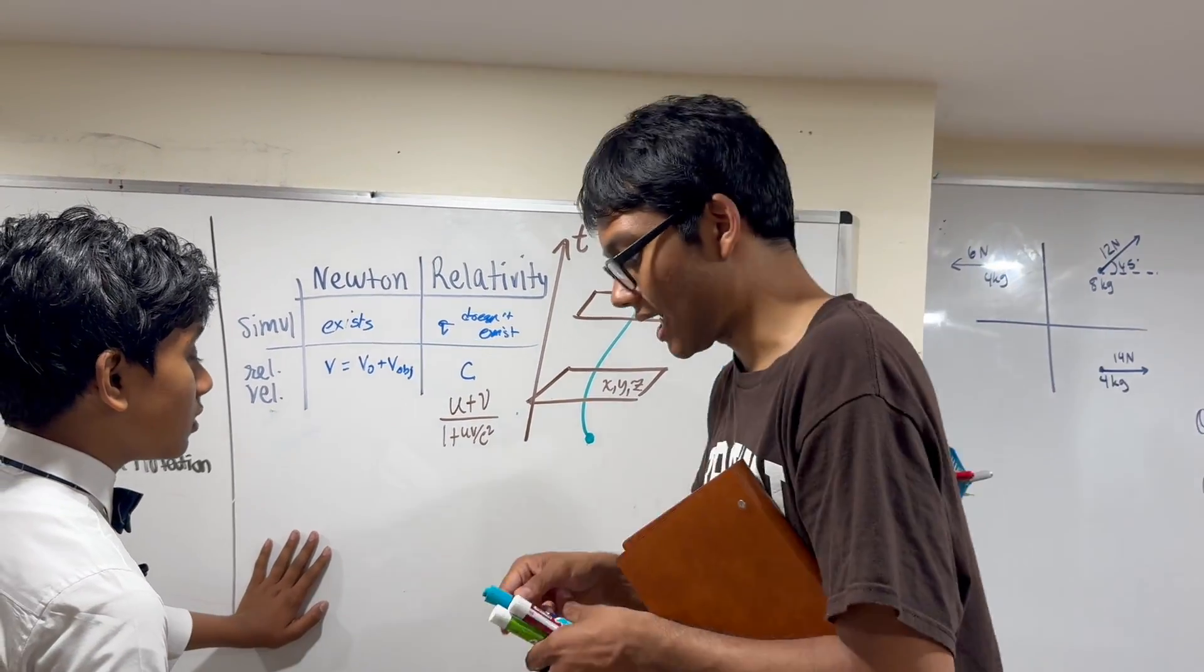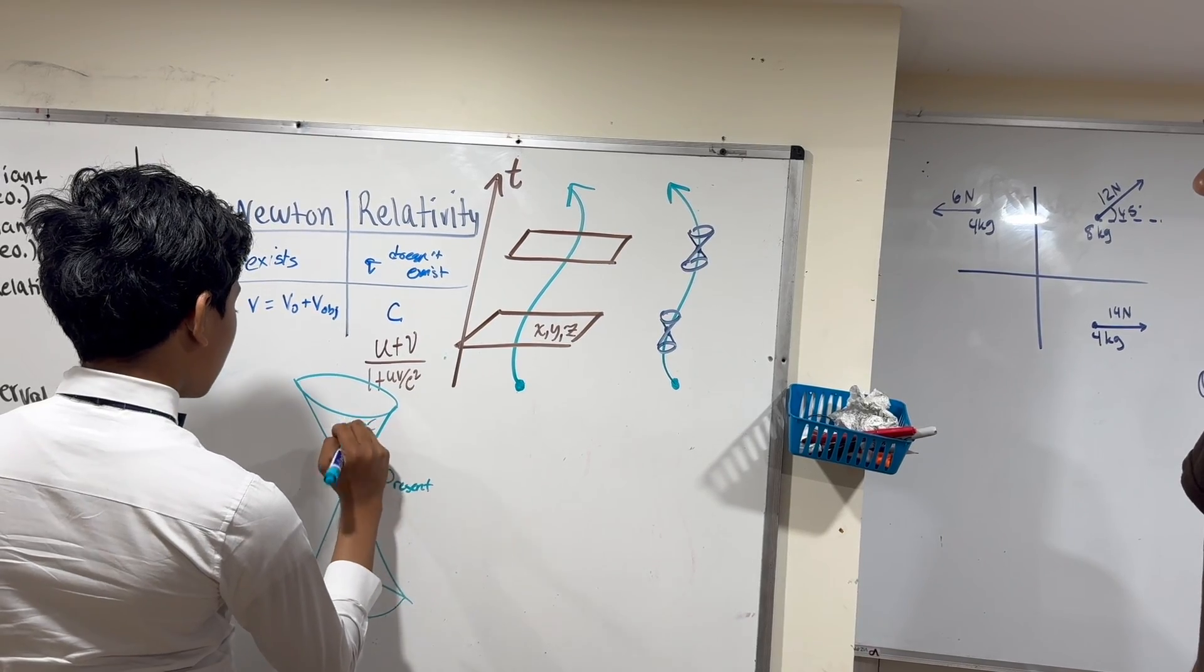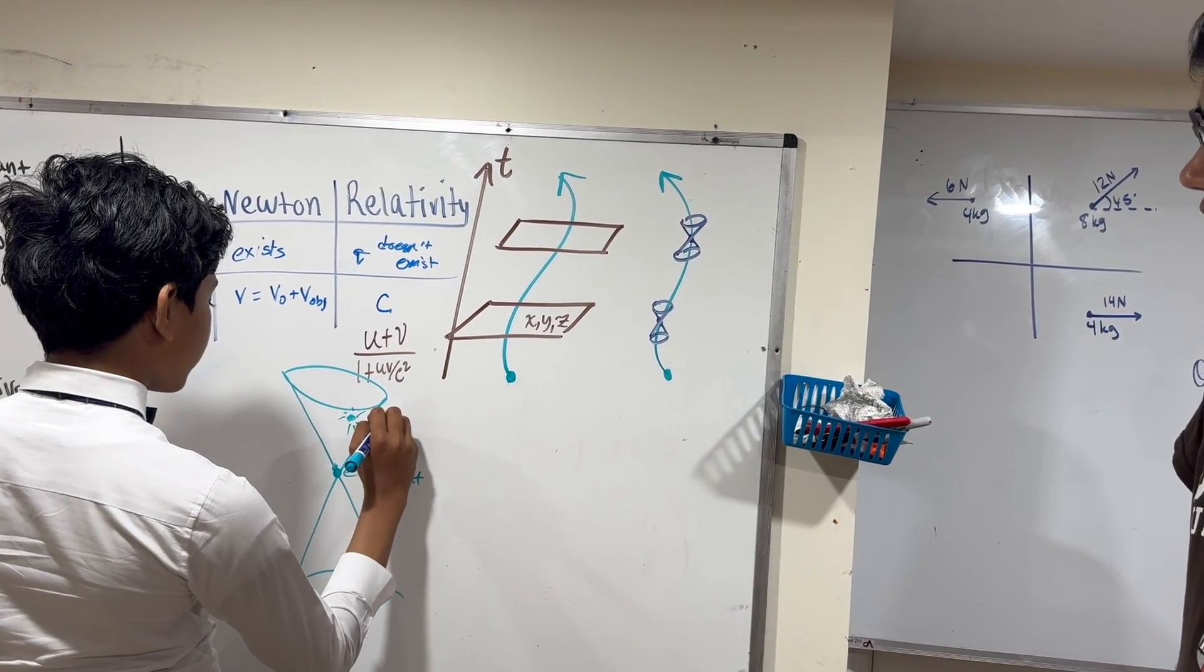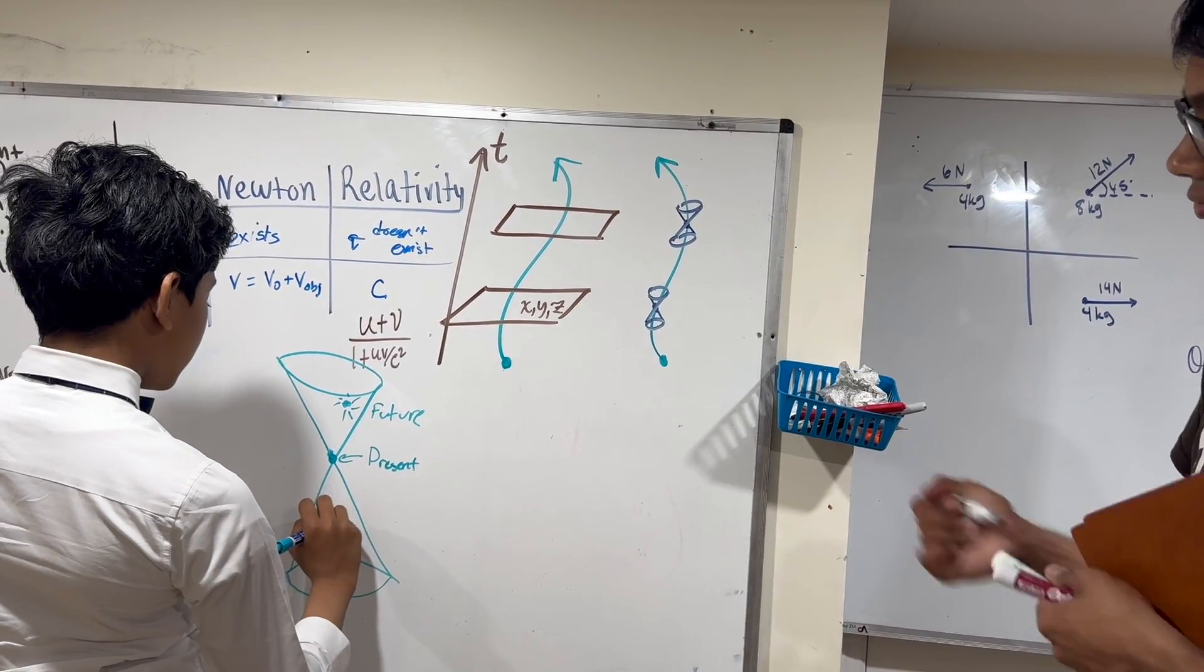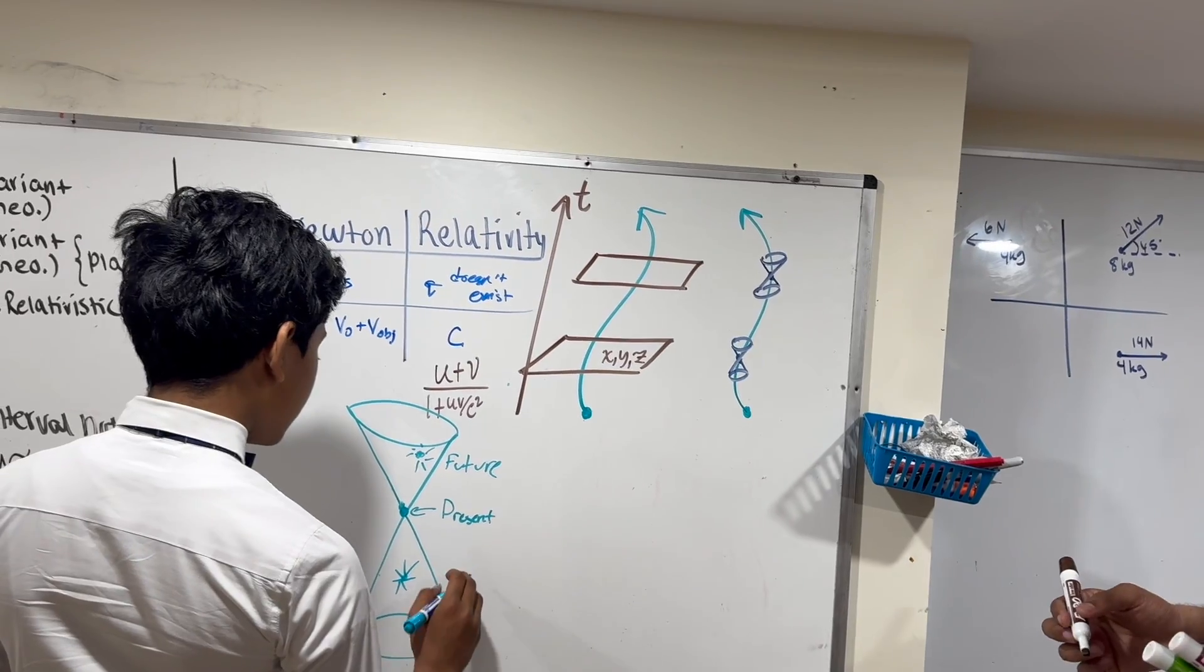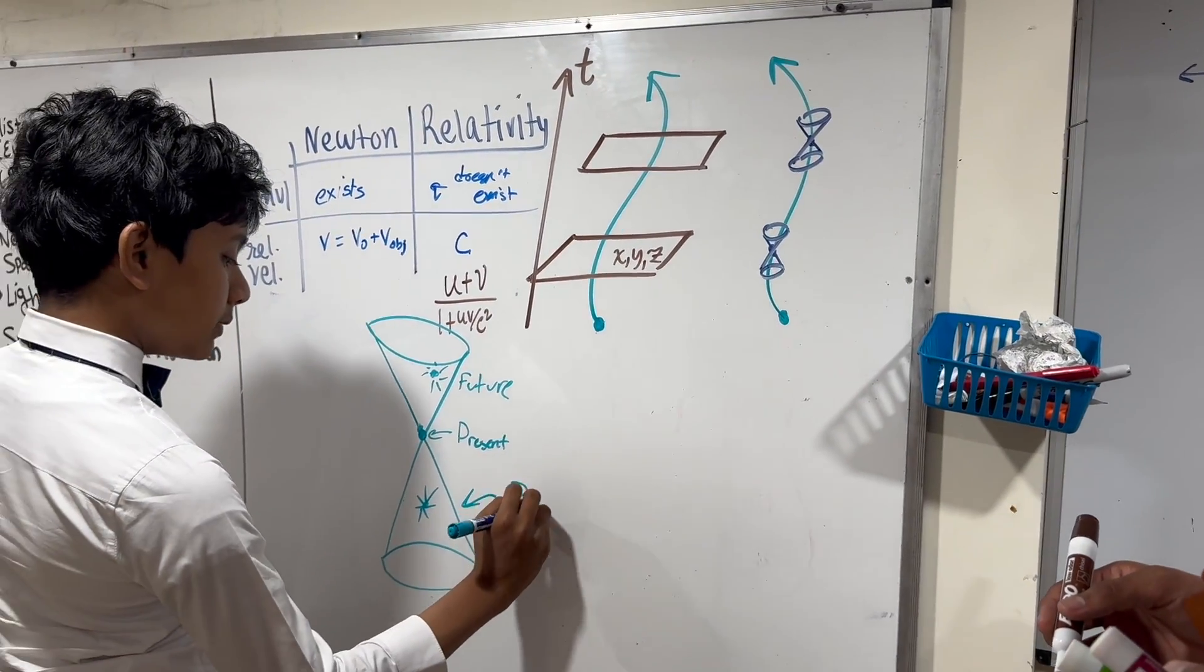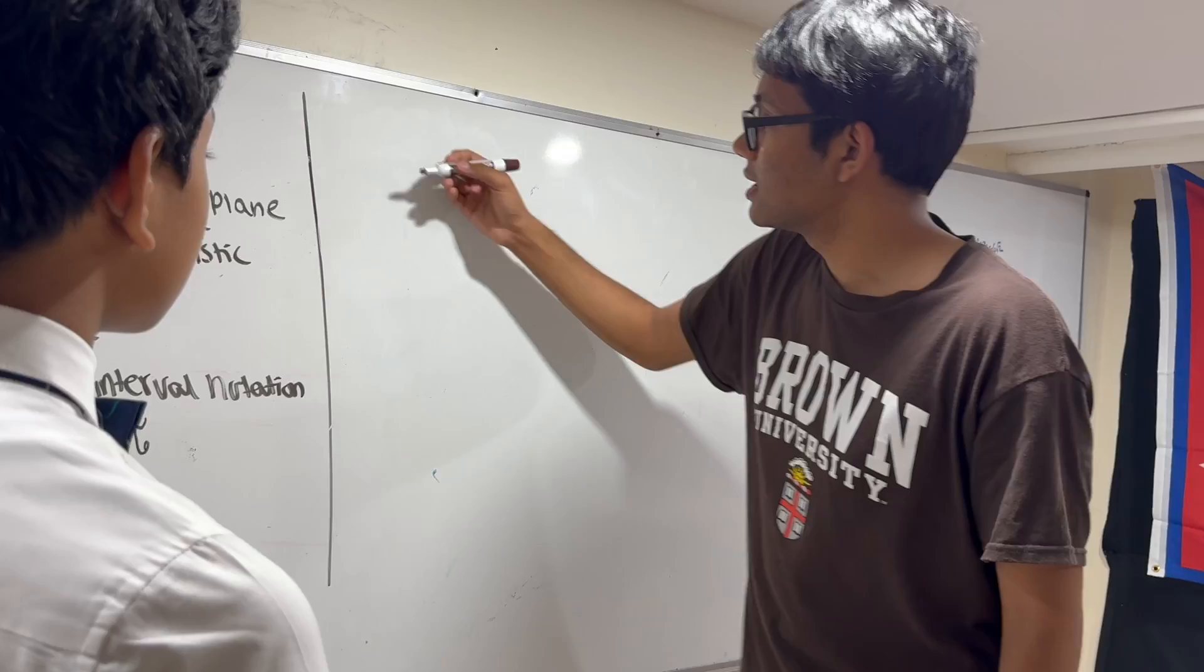Now, speaking of light cones, this is the present. Any events that are taking place here are said from this point of view to have occurred in the future, while any points from this reference frame that occurred in this light cone, this part of light cone has been said to occur in the past.